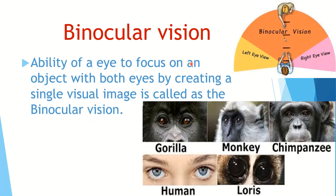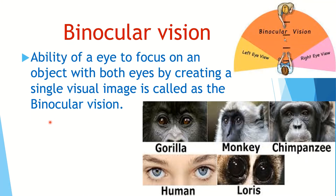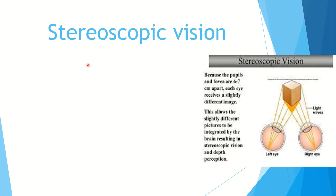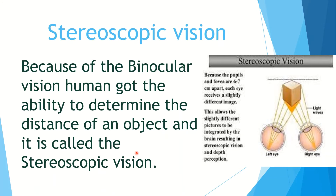The ability of the eye to focus on an object with both eyes by creating a single visual image is called binocular vision. Mammals such as gorillas, monkeys, and humans are examples. The ability to determine the distance of an object is called stereoscopic vision.